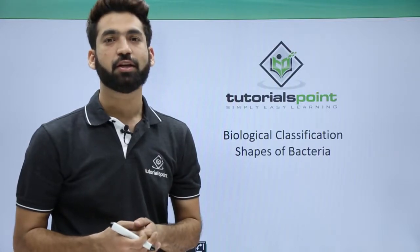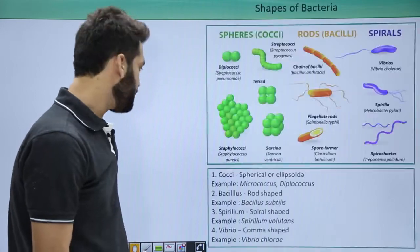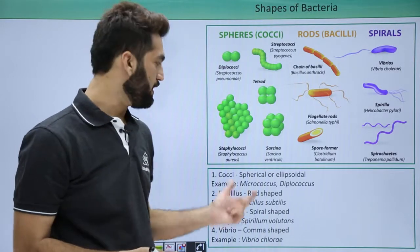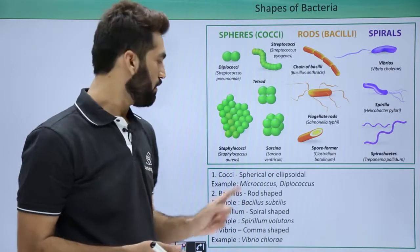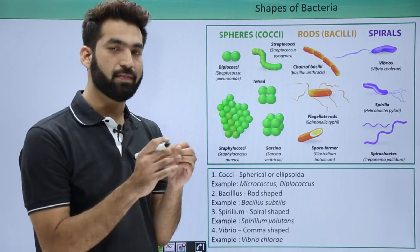In this session, I'll be detailing the different shapes of bacteria. According to their shapes, bacteria are classified into four different types. The first is cocci or spherical-shaped bacteria.